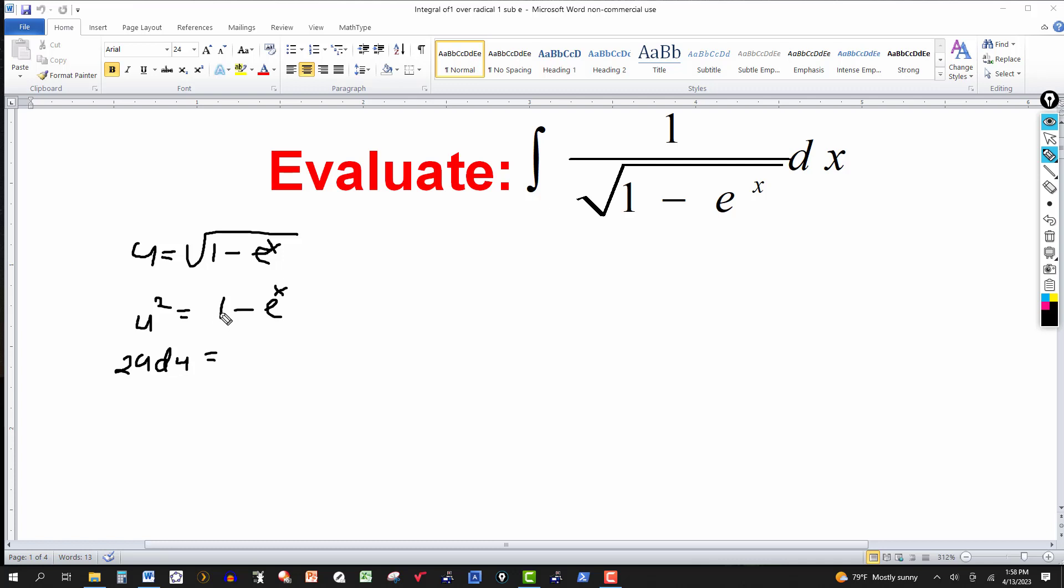On the right side, the derivative of 1 is 0. The derivative of minus e to the x is minus e to the x dx. And I'm going to solve for dx here. So I'll multiply or divide both sides by minus e to the x. So I'll get minus 2u du over e to the x. And I come back to this.